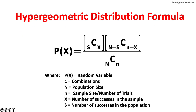The formula to calculate the hypergeometric probability uses three combinations. In the numerator: one, the combination of the number of successes in a sample taken from the number of possible successes in a population; and two, the combination of sample size minus successes in the sample, taken from the population size minus successes in the population. Three, in the denominator, the combination of number of trials taken from the population size.